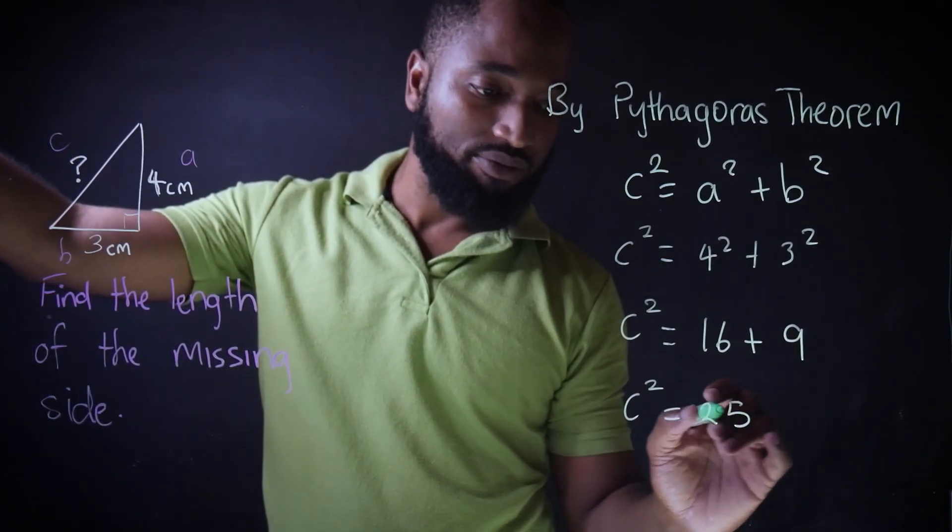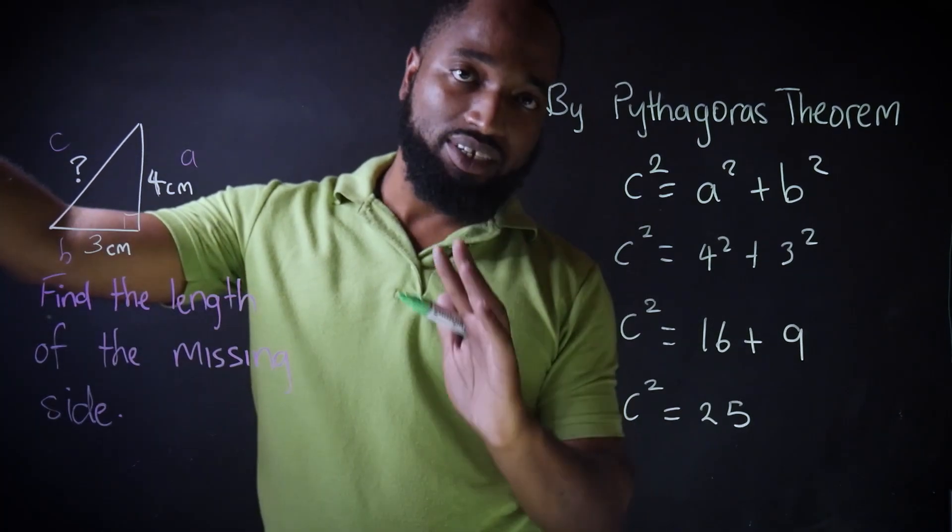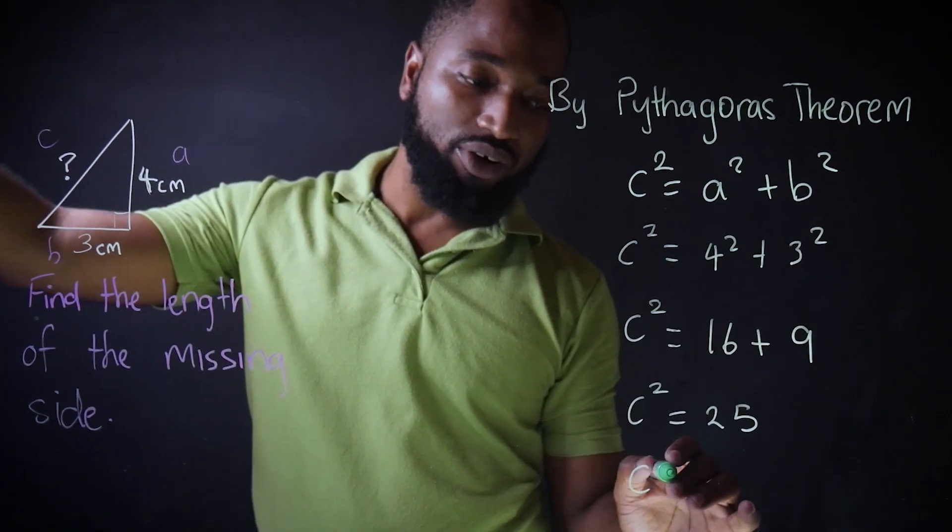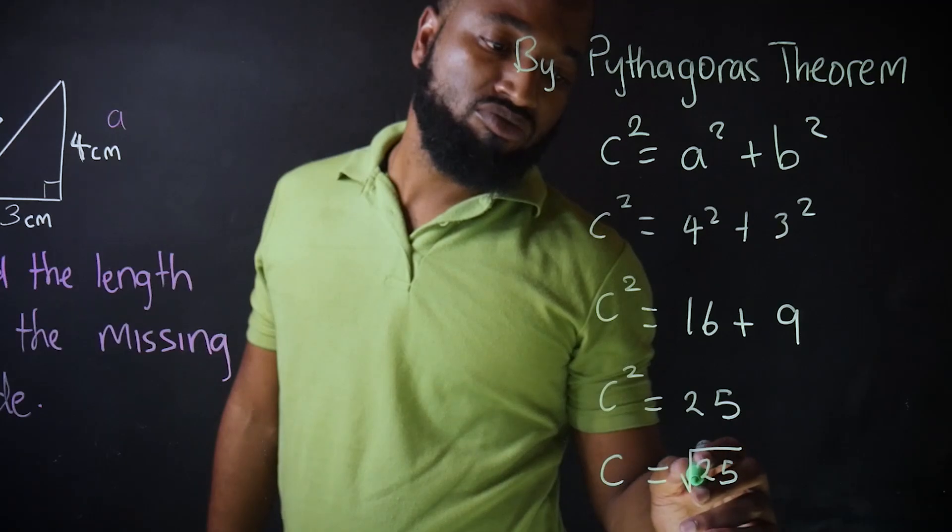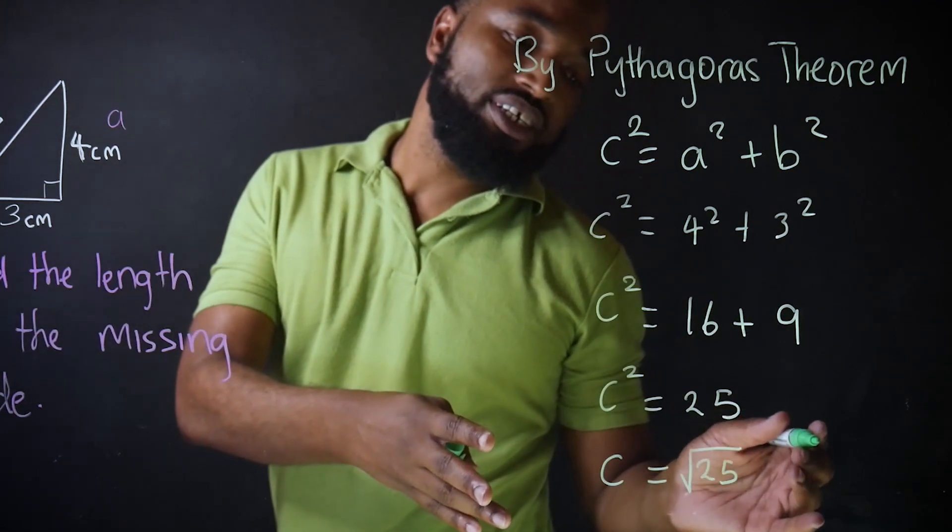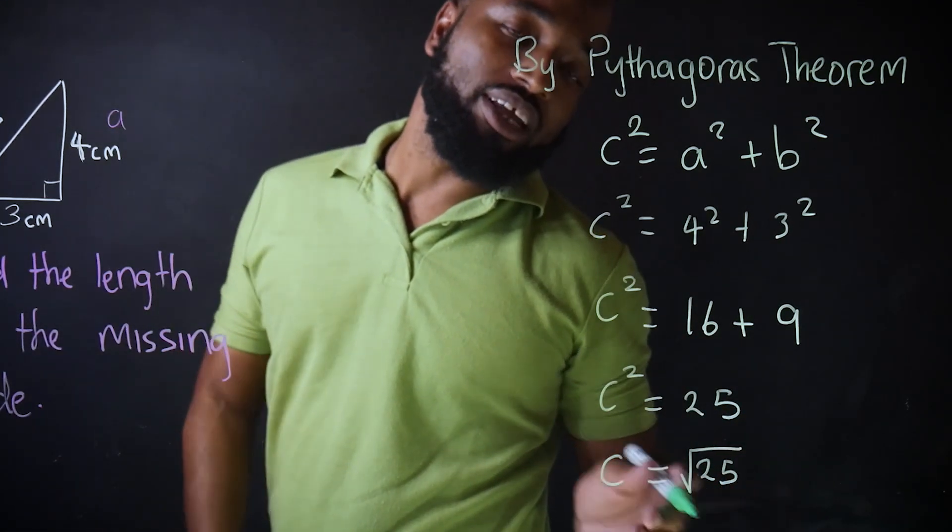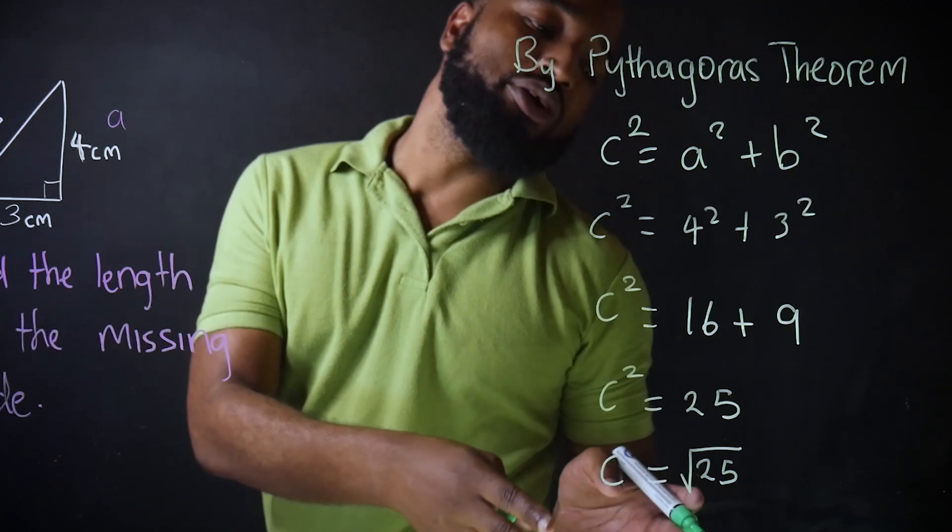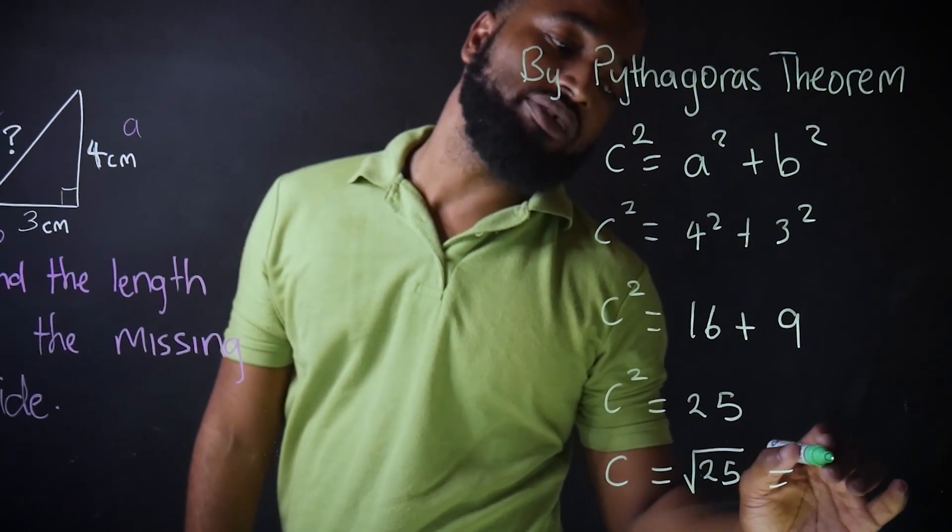C squared is equal to 25. This means C is equal to the square root of 25 which is 5 centimeters. I really want to write it on there but I'm running out of space so I just write equal to 5 centimeters.